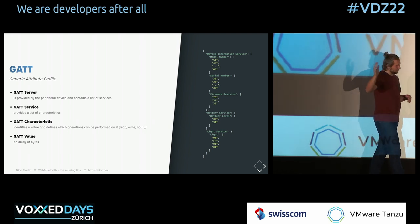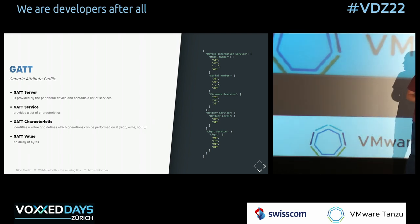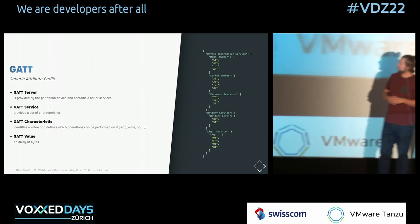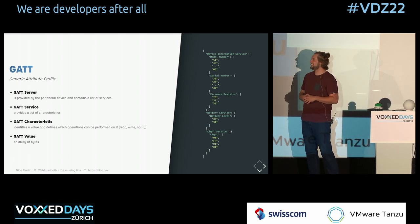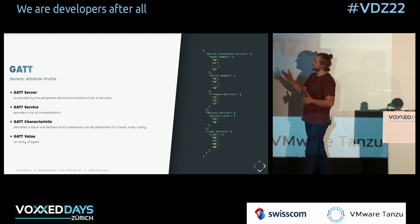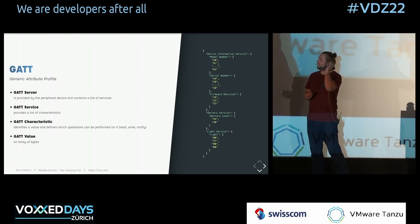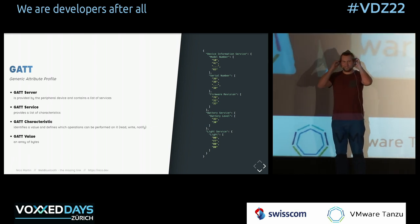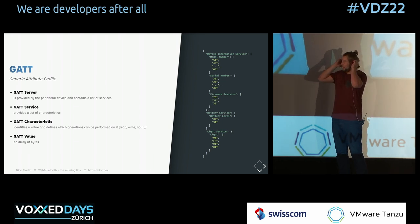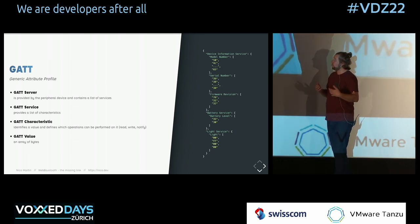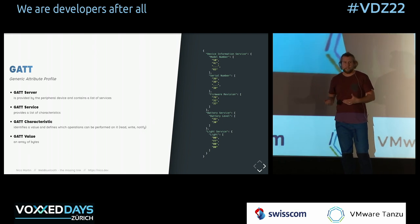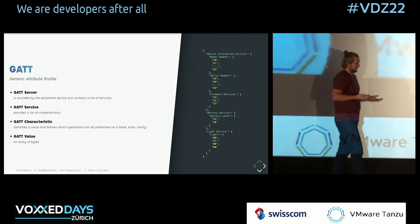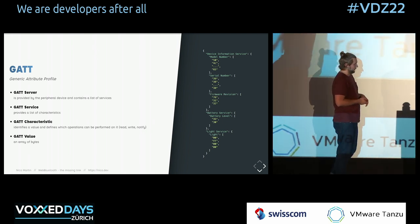A GATT value is a very low-level data structure — basically just an array of bytes. I imagine it like a JSON file where the server is the JSON, the first level is the service, the second level is the characteristic, and the value is that array of bytes.